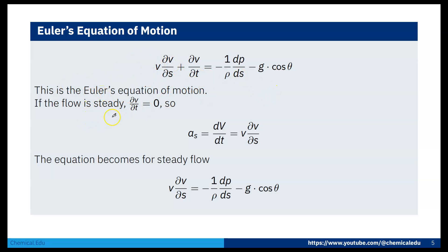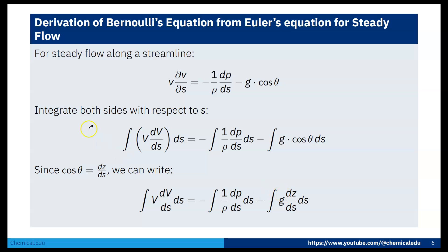Now if we consider steady flow, ∂V/∂t = 0, so acceleration becomes dV/dt = V(∂V/∂S). The equation becomes: V(∂V/∂S) = −(1/ρ)(dP/dS) − g cosθ. This is the Euler equation for steady flow along a streamline.